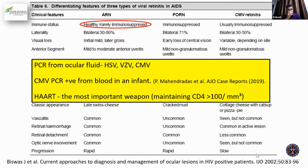Regarding CMV, there was an interesting article in which an infant had retinal lesions and isolation of the organism from the eye was not possible. So the blood was sent for PCR and it tested positive for CMV. A similar case was reported in adults — PCR from blood was positive for CMV. One can consider blood PCR for CMV if you really want to rule out CMV and AC tap or vitreous tap is not possible. HAART is the most important weapon against CMV retinitis — maintaining CD4 counts more than 100 decreases the incidence of CMV retinitis.